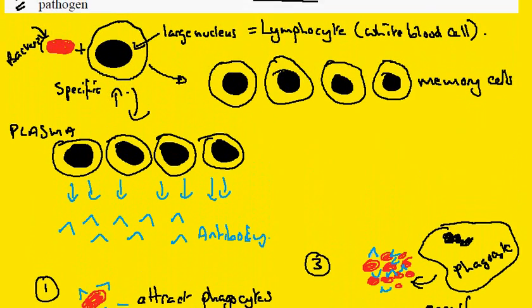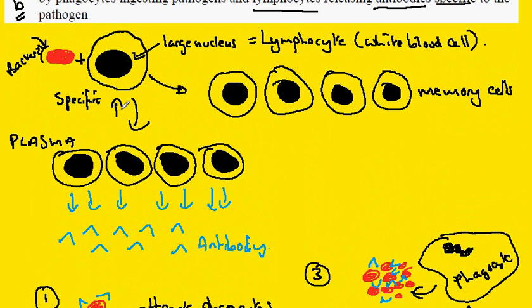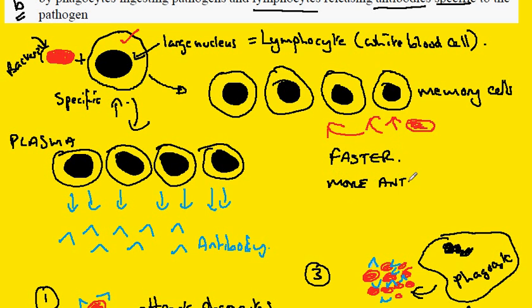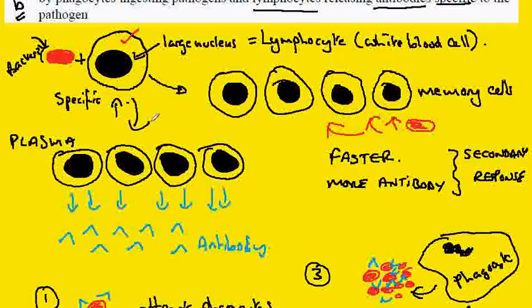Returning to our memory cells: if after the infection we meet the same bacterial cell again, the chance of it meeting one of our memory cells is greater than the chance of meeting the one original cell. The consequence is that we react faster and with more antibody — so fast that we probably don't realize we've been infected. This is called the secondary response, and the original pathway is the primary response.